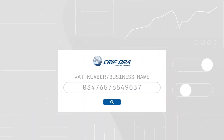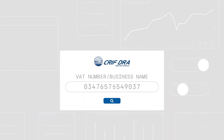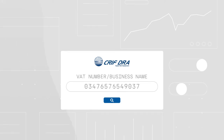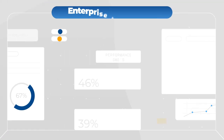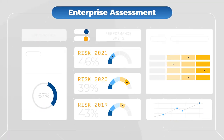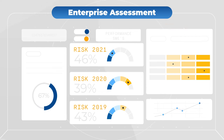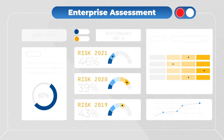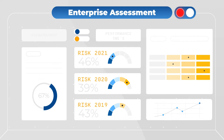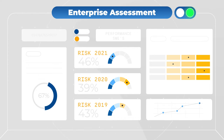Just enter the business name or VAT number to get financial statement information, industry benchmarks and performance, with trends over the last three years and forward-looking forecasts.